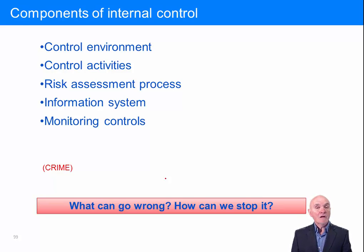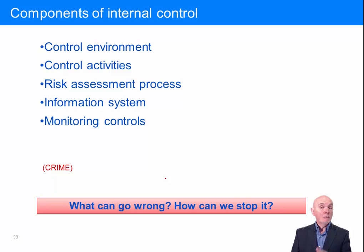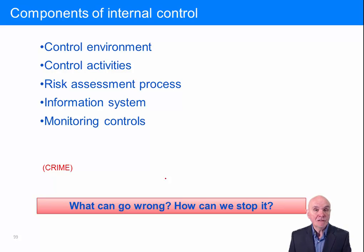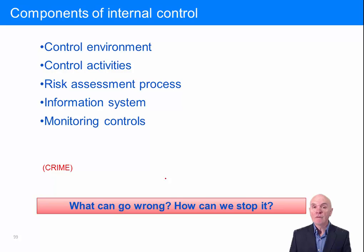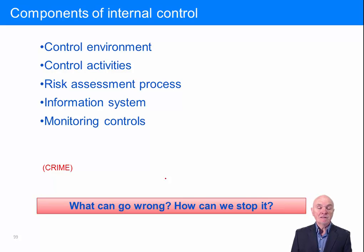So control environment — is it favourable to a good system of internal control and is it supporting people doing things properly? Then control activities: what exactly do people do to impose internal control? An example would be a regular bank reconciliation; another example is authorising transactions before they are allowed to go through.